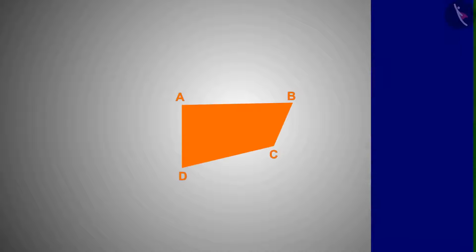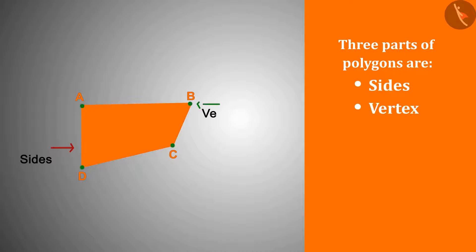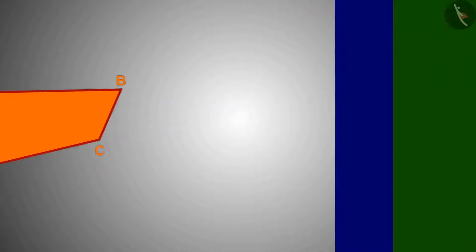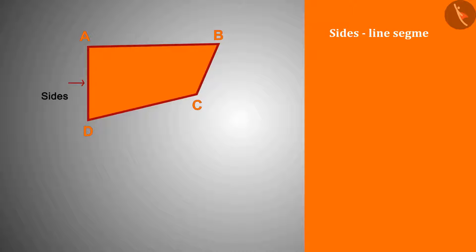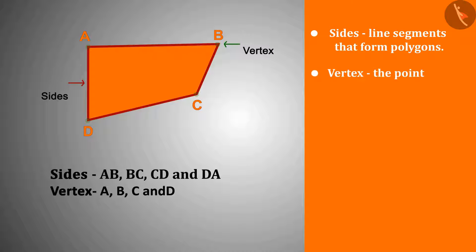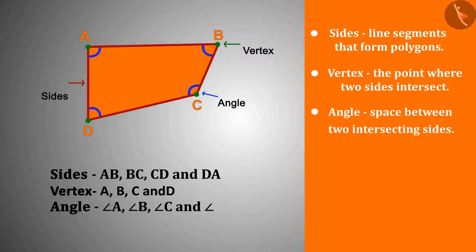Any polygon is made up of three parts: side, vertex, and angle. The sides are the line segments that form polygons. The vertex is the point where two sides intersect, and the space between two intersecting arms is called an angle.